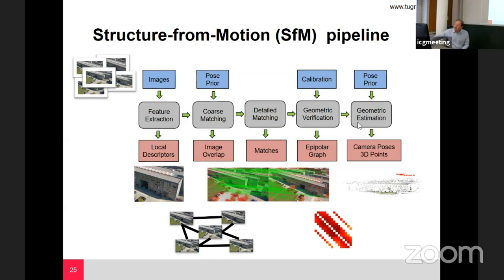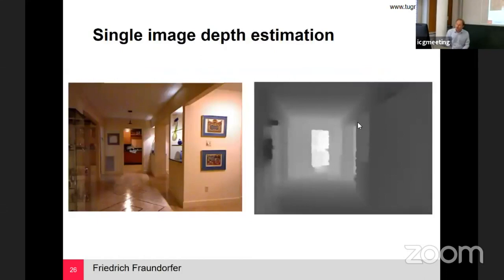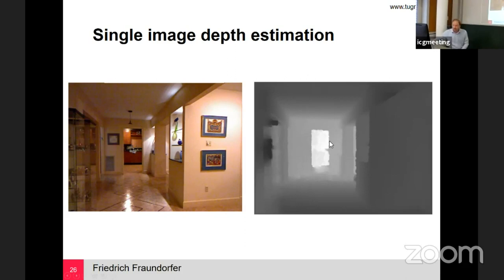One idea is to compute depth — depth estimation — not in the traditional way but with machine learning using single image depth estimation. You can compute a depth map from a single image. Traditional geometric estimation needs at least two images; with deep learning you can train a system to do this from a single image. This works like magic and is very interesting. But to use these techniques in robotics, you need to ensure the results are correct — so we also studied their accuracy.